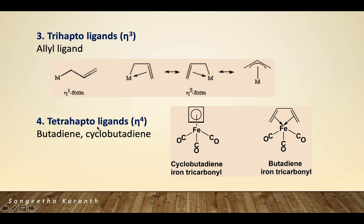Tetrahaptoligands (η4) have four carbon atoms coordinated to the central metal. Examples are butadiene and cyclobutadiene. In cyclobutadiene iron tricarbonyl, all four carbon atoms of the cyclobutadiene ring are coordinated with the iron; similarly, the four carbon atoms of butadiene are coordinated with iron in butadiene iron tricarbonyl.